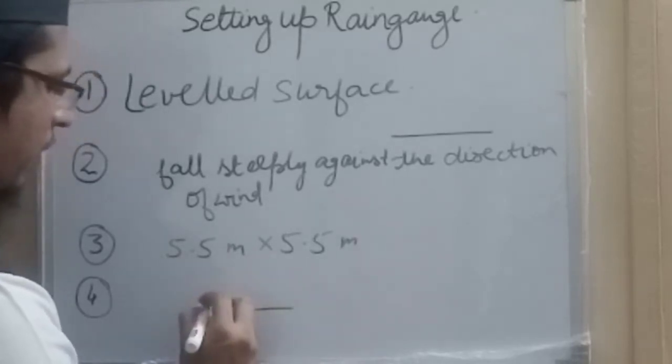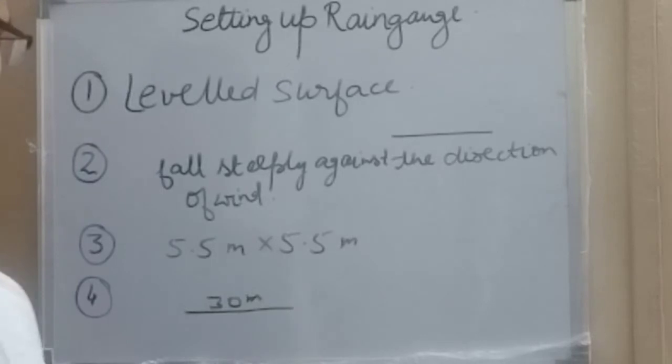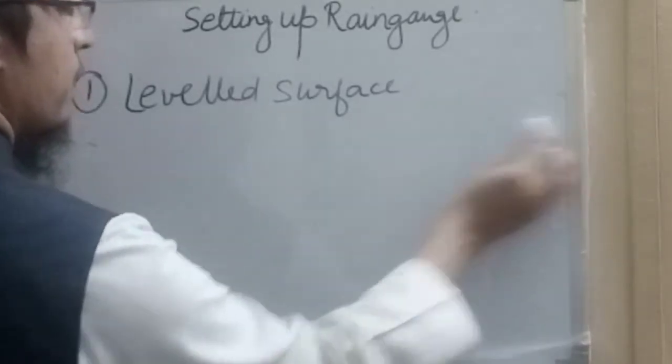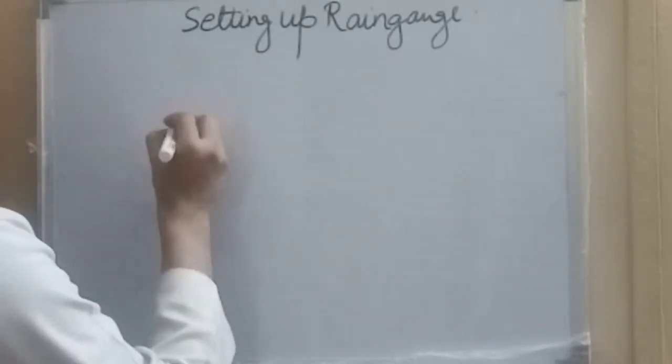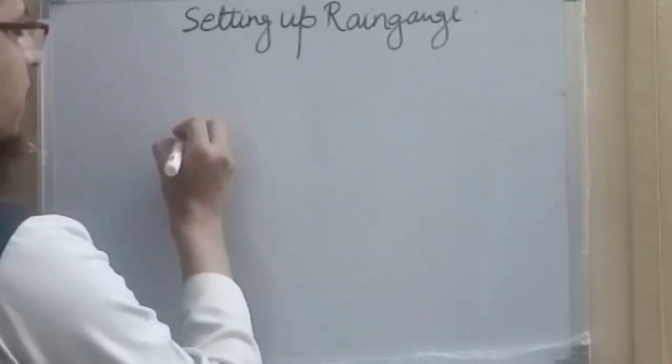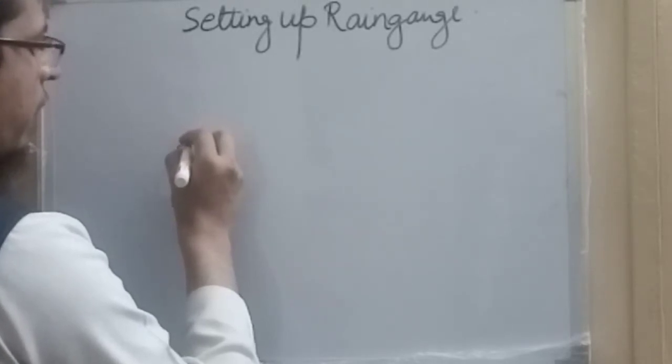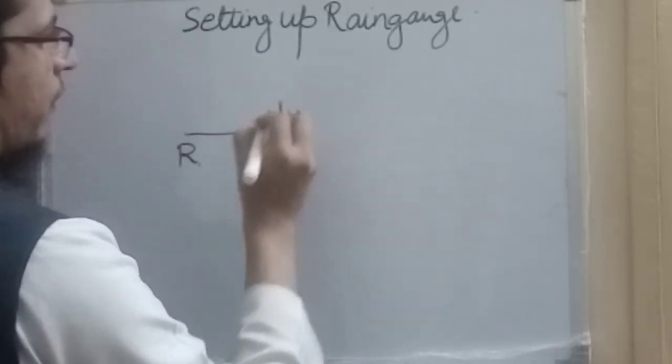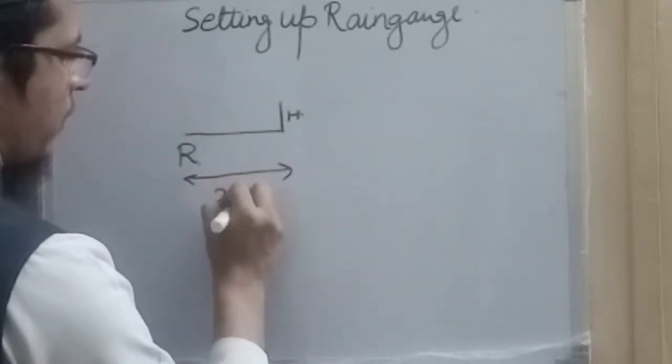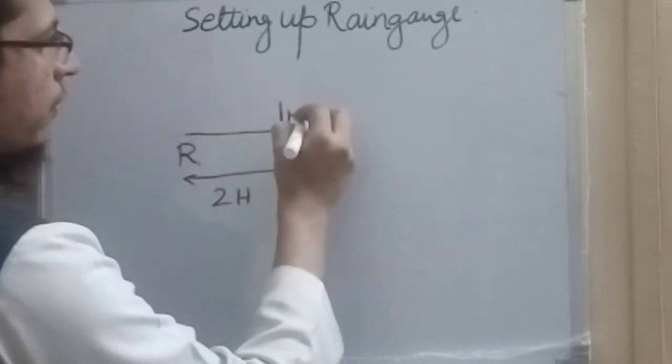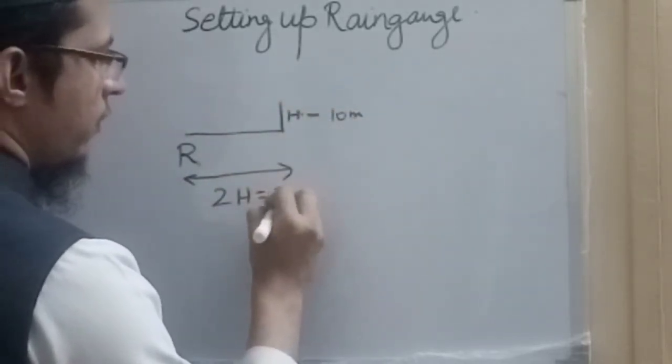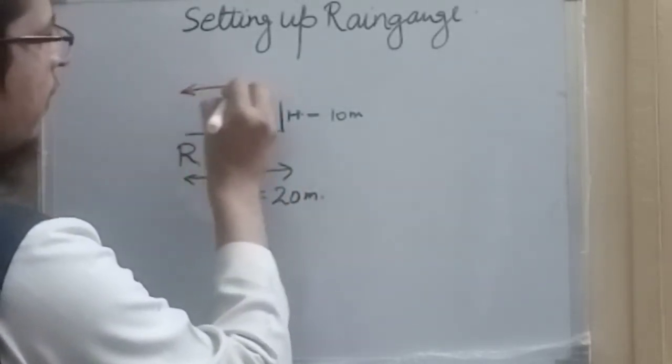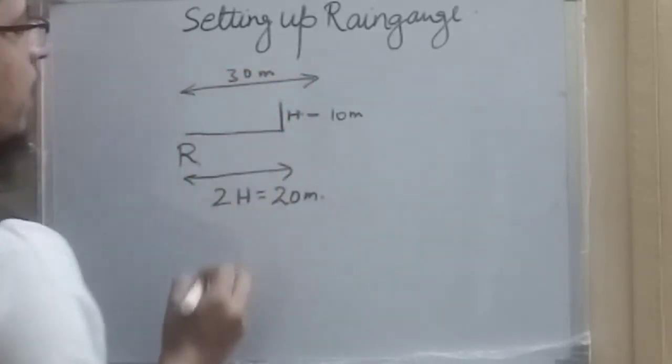Or otherwise, suppose we are having a rain gauge here at this location. So the distance of the nearest object to this is, suppose here if its height is H, then this distance should be at least 2H. Otherwise, suppose H is equal to 10 meter, so this should be at least 20 meter. Otherwise, the object should be at least 30 meter away from the rain gauge. This was the fourth point, that what should be the distance from the nearest object.